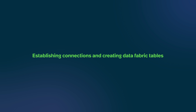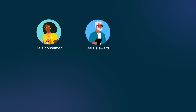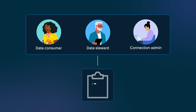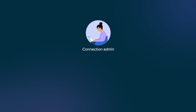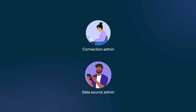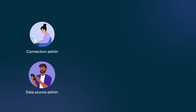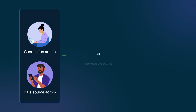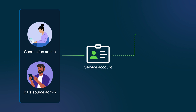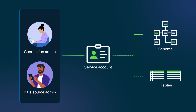Let's look at the process for establishing connections and creating data fabric tables. First, a data consumer meets with a data steward and a connection administrator to discuss data requirements for a new application on the ServiceNow AI platform. Next, the connection administrator gathers the data requirements and meets with the data source administrator to create a service account that can access the schema and tables needed for the new application.